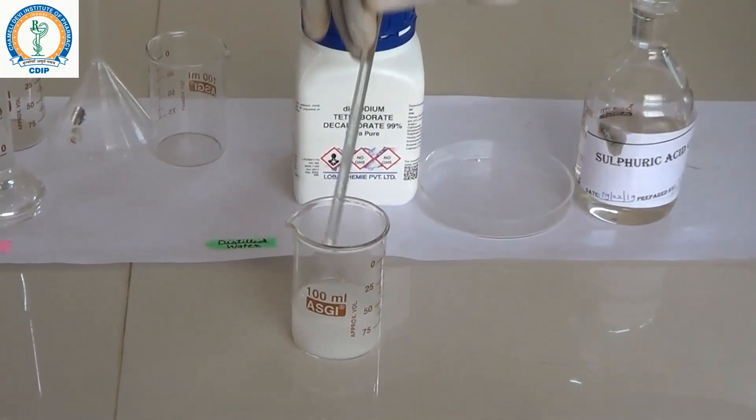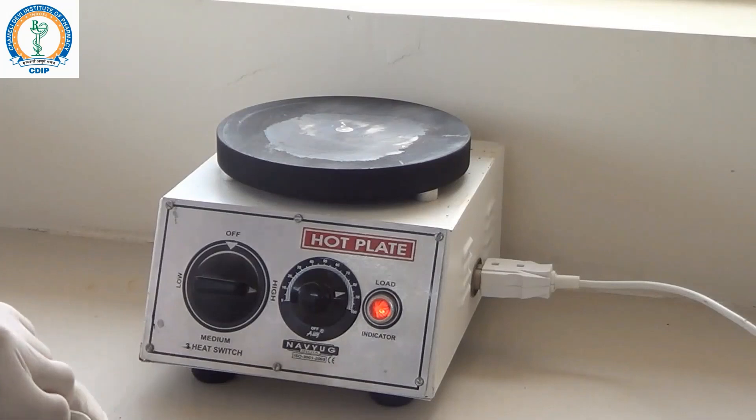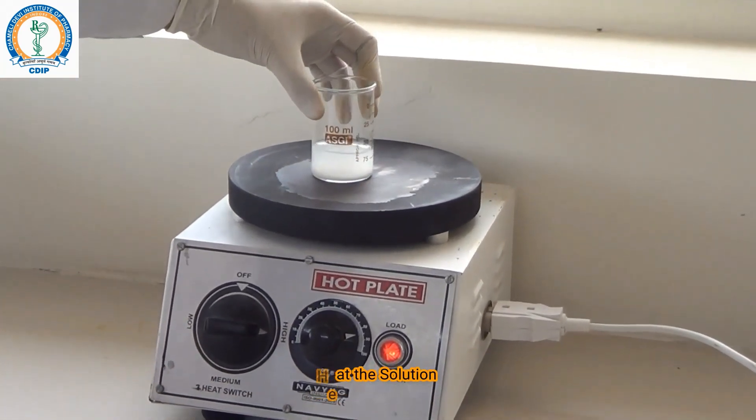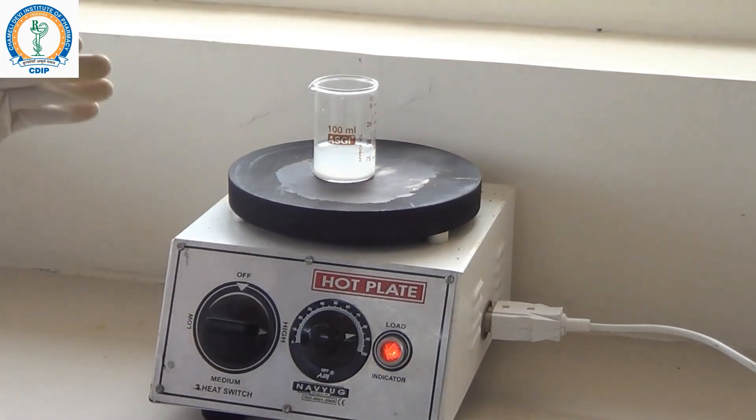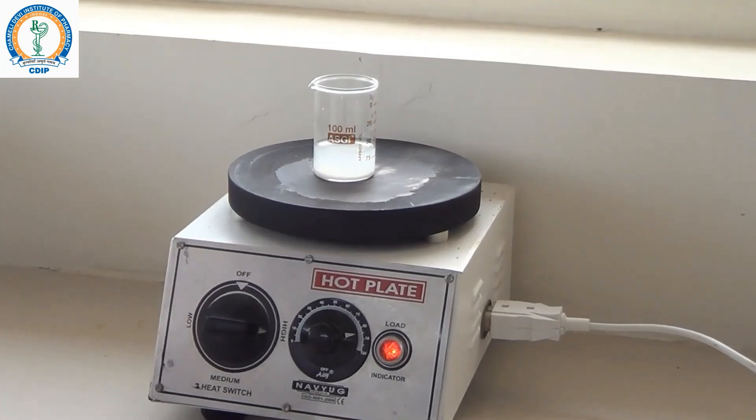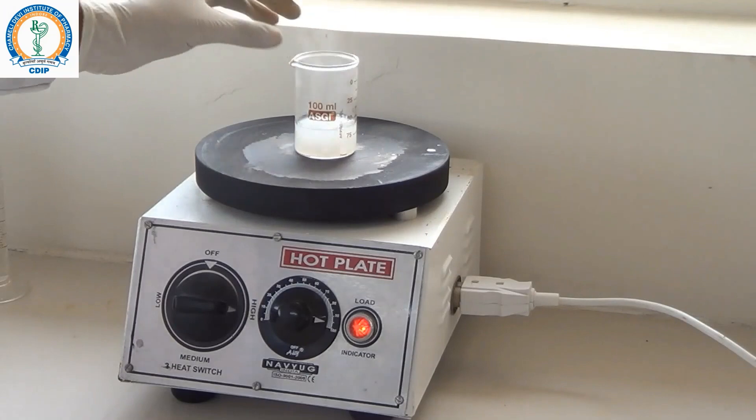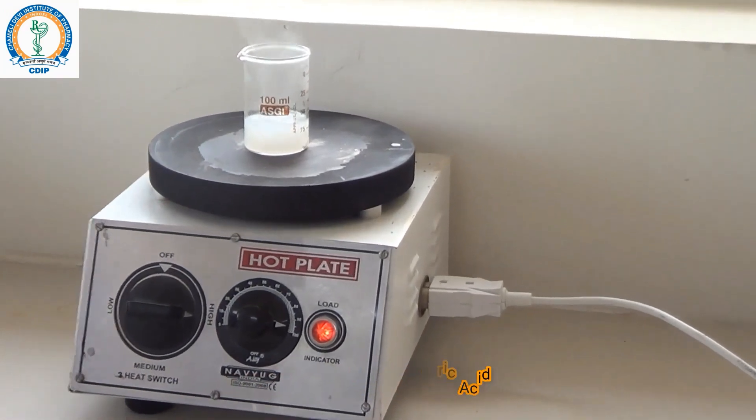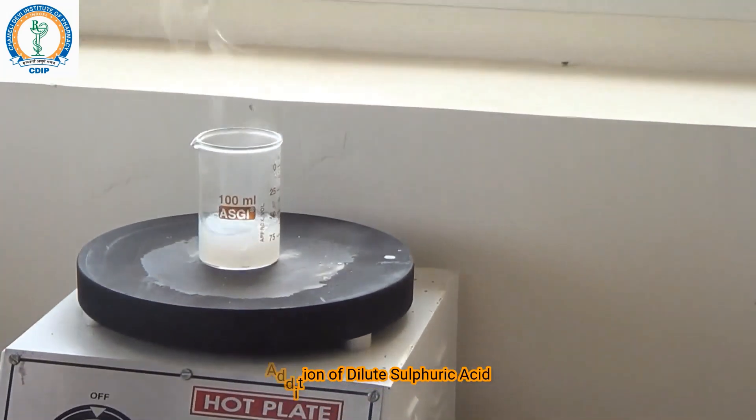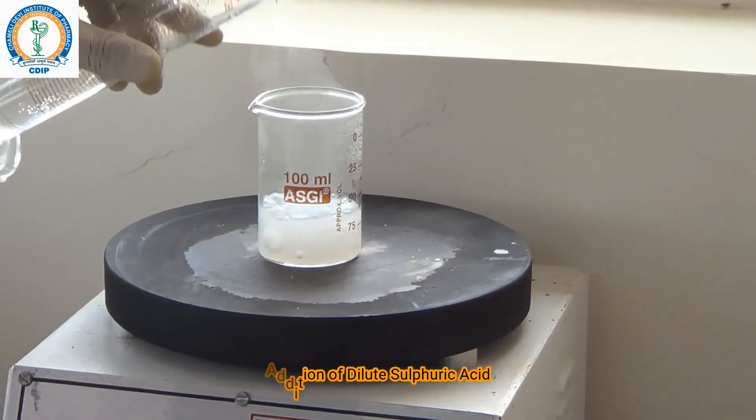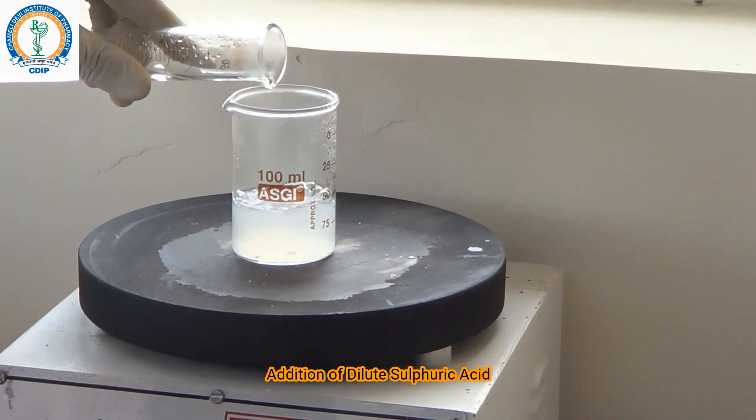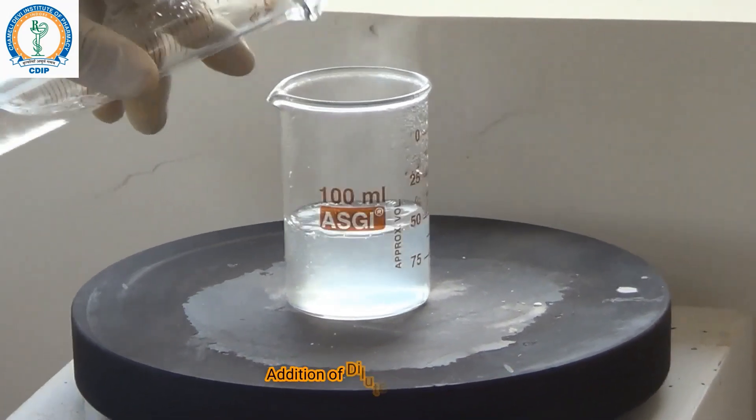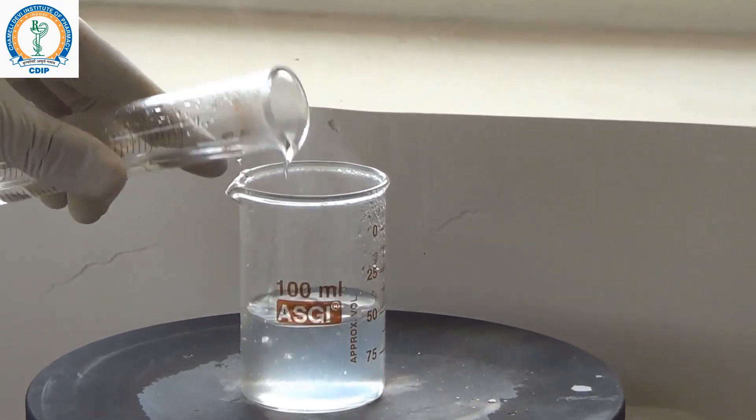After mixing, transfer the beaker onto a hot plate to warm it until boiling takes place. Now you can see the boiling is here in the solution. Now add 10% volume by volume H2SO4 to the solution and boil the solution for some time.